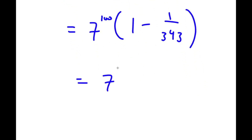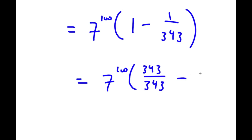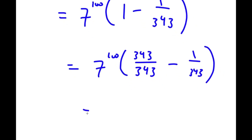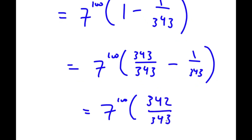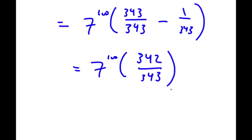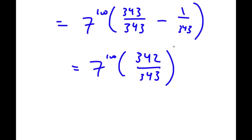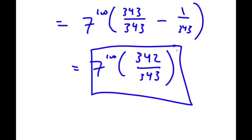Rewriting 1 as 343 over 343, I have 343 over 343 minus 1 over 343, which equals 342 over 343. So the answer is 7 to the power of 100 times 342 over 343.